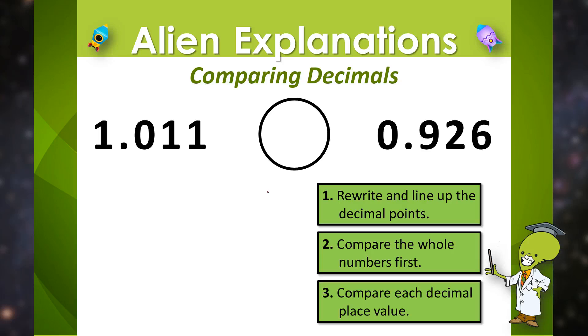Let's look at another example. So first I am going to rewrite each number. I am going to line up my decimal points. One, zero, one.